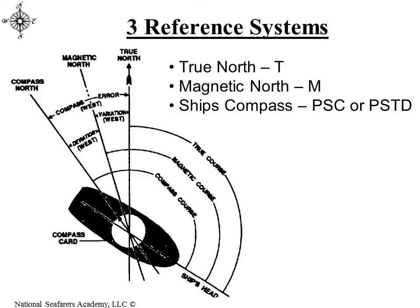With the true north reference system, everything is referred to true north. As you can see in the diagram, the particular ship has a heading — it's on a steady course — and if we reference the heading of the ship's vessel to true north, then that would be the true course. Likewise, if we reference the ship's heading to magnetic north, that would be the magnetic course of the ship. And if we just read the compass, we would observe the ship's compass course.